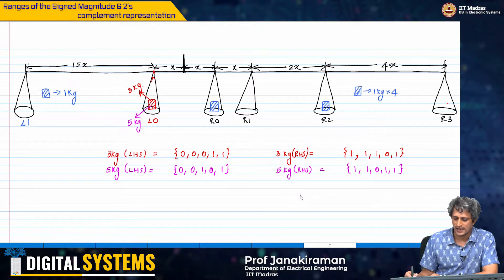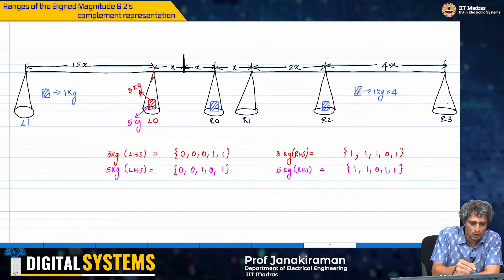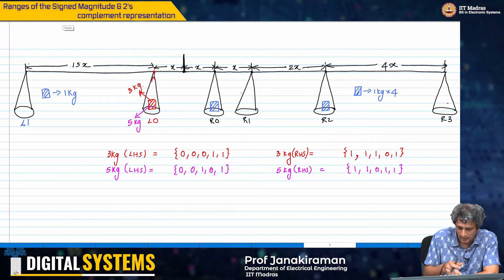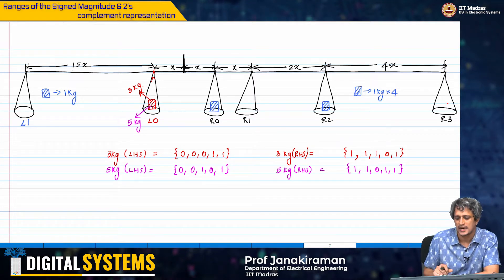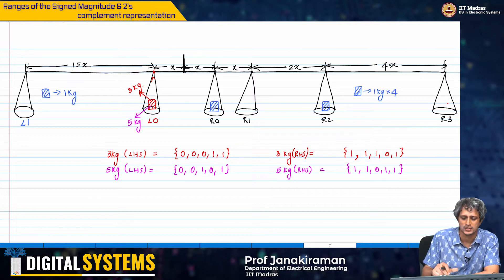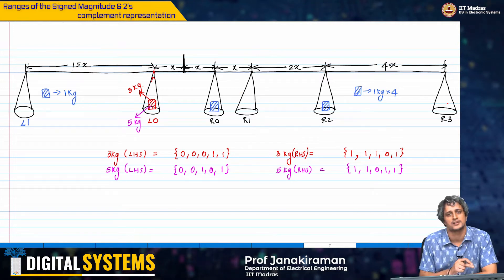What we have done is: on the left hand side, I have considered the case when the 3 kg and 5 kg are placed on L0. On the right hand side, I have considered the case when 3 kg and 5 kg are placed on R0. Then I am telling you the configuration of L1 and R0 to R3 for both the cases.